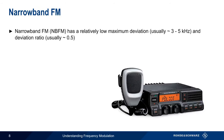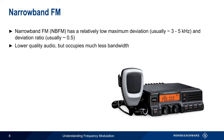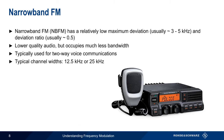Narrowband FM has a much lower maximum deviation compared to wideband FM, usually only 3–5 kHz. By definition, the deviation ratio of narrowband FM signals is always less than 1, and in practice they tend to be somewhere around 0.5, although this can vary widely between radios and applications. This lower deviation ratio means lower audio quality, but also a narrower signal bandwidth, and thus narrowband FM is normally used for two-way voice communications. Typical channel widths are usually 12.5 or 25 kHz, although this too can vary depending on the application.